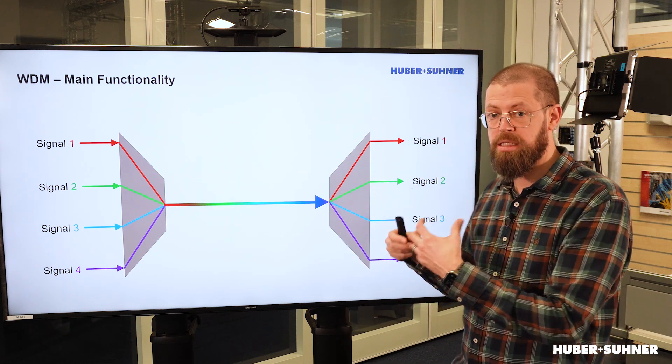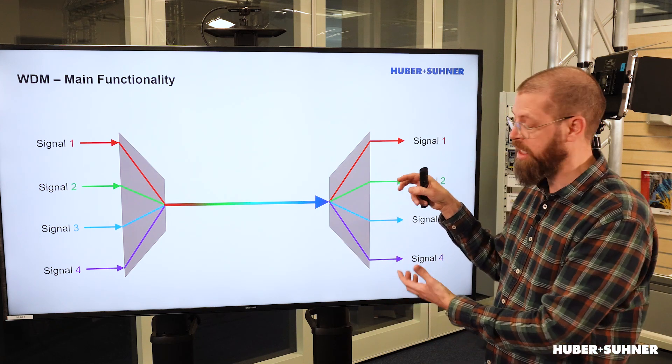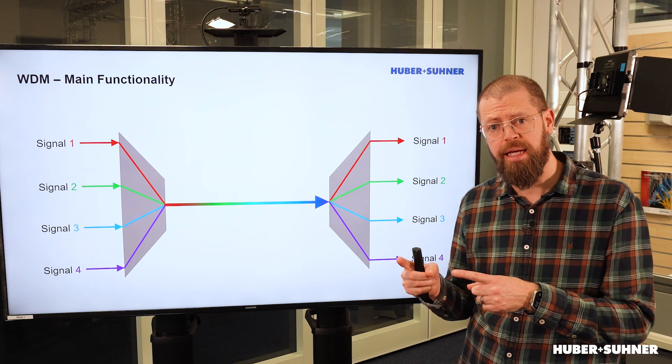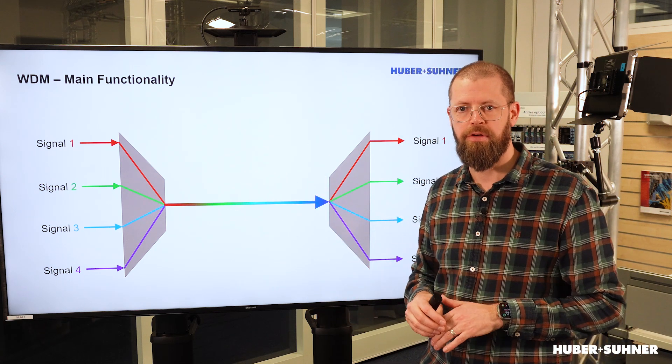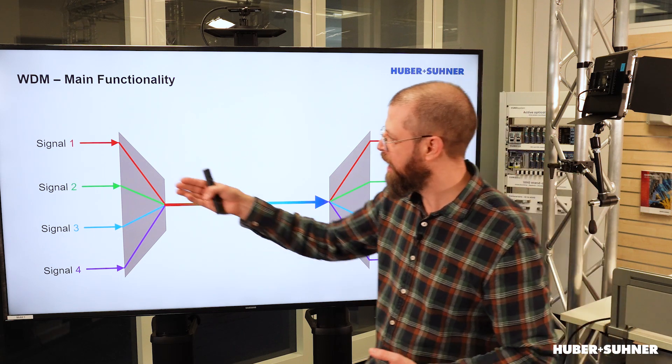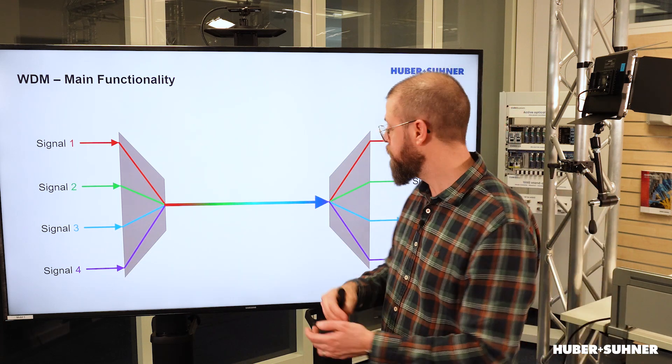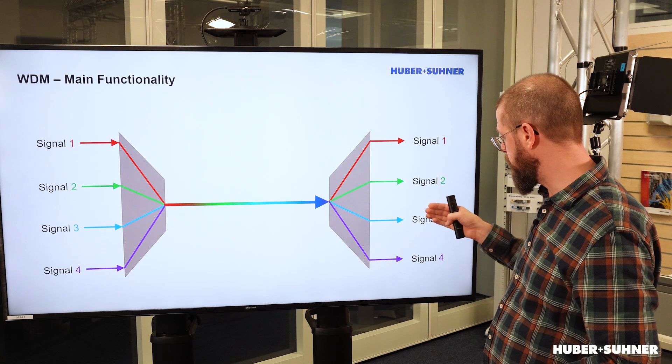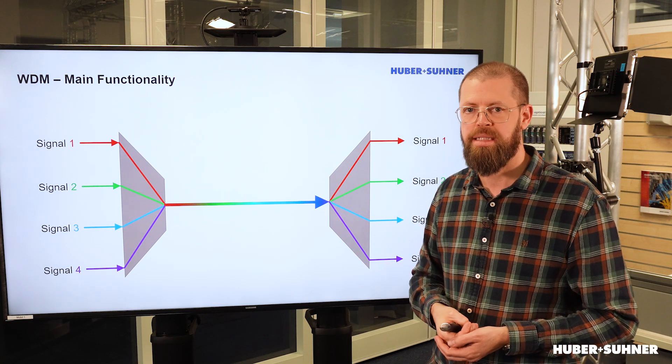And on the other side, the demultiplexer, once again with filter technologies as an example, will separate those signals onto the individual outputs again. But the important thing here is that each individual signal is completely independent from the other ones. We can even mix and match different data rates. So we can have here a 1-gig signal, a 10-gig, a 25-gig and a 100-gig signal. And the important thing is, on the other side, we will still have 1-gig, 10-gig, 25-gig and 100-gig because they are literally independent signals.